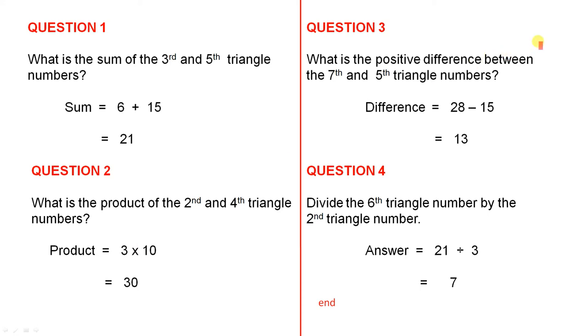Question 3. What is the positive difference between the seventh and fifth triangle numbers? That's 28 minus 15, and that gives you 13.